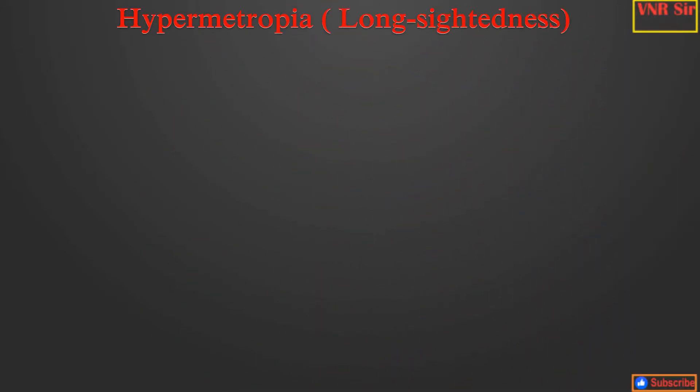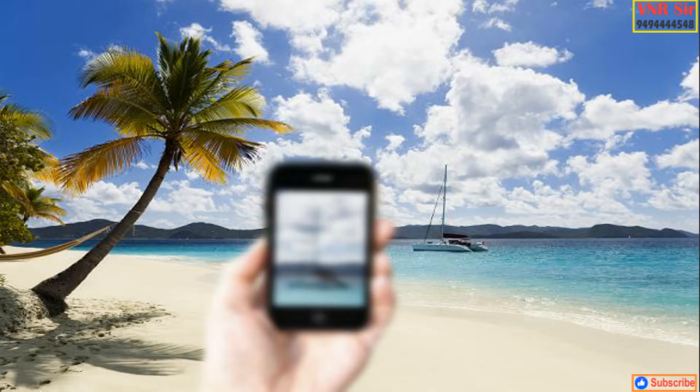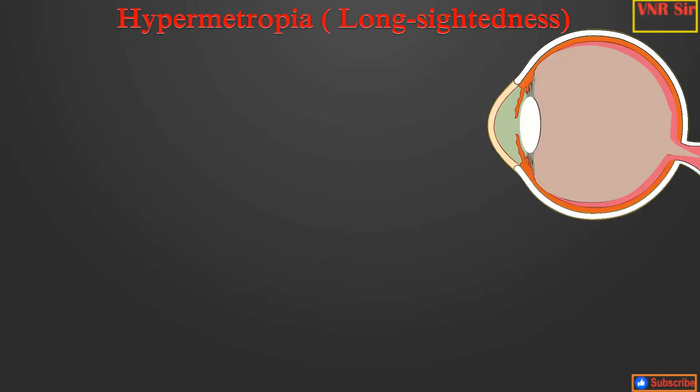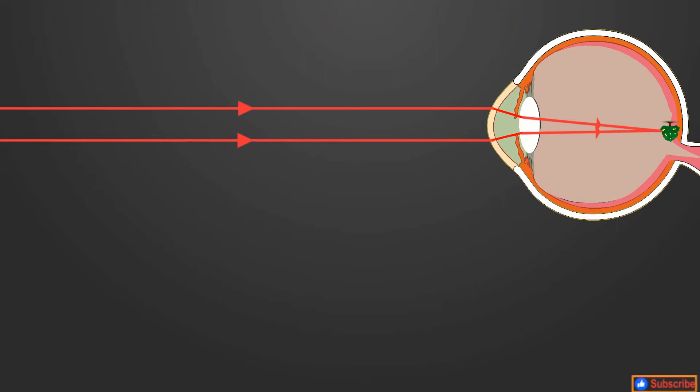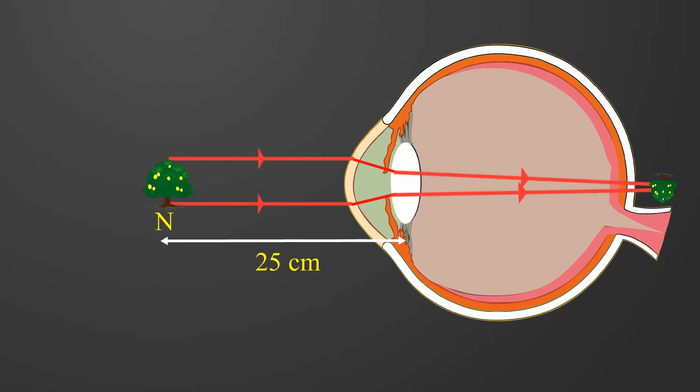Hypermetropia: A person suffering from this defect can see distant objects clearly but cannot see near objects clearly. The distant object can form a clear image on the retina, but when the object is near, this object cannot form on retina. The image forms beyond retina.